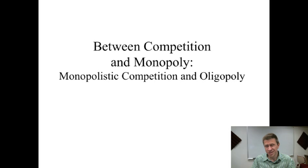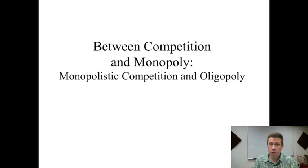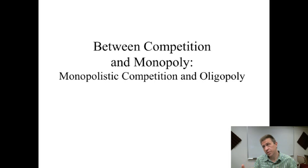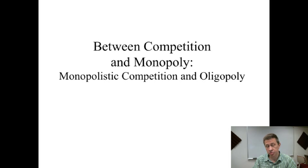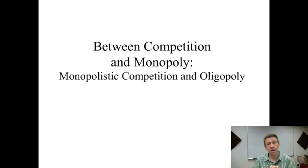Monopoly is just as extreme. It assumes there are no good substitutes at all, and for most products that's just not the case. There are substitutes for almost everything, so monopoly is an extreme case as well. Most market structures are in between, and in principles of microeconomics we cover two: monopolistic competition and oligopoly.